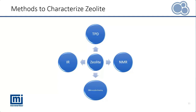With microcalorimetry, the heat of adsorption can be obtained, but the binding sites cannot be known through calorimetry alone. Each technique has its strengths and weaknesses, and no single method is available to provide all the information needed. So we can pick and choose several methods to obtain the data of interest. Of course, we will focus on the TPD technique in this webinar.